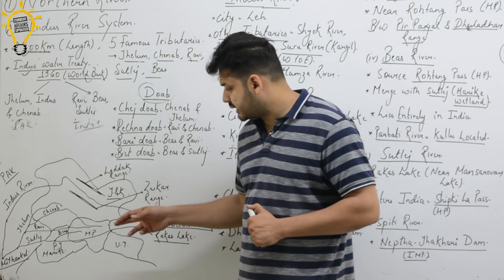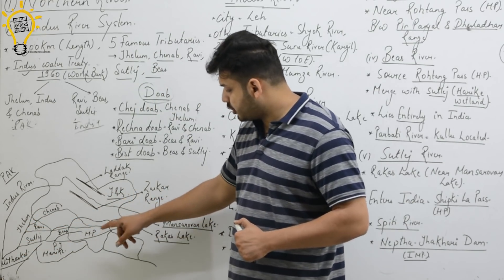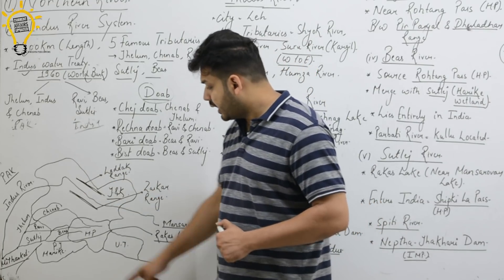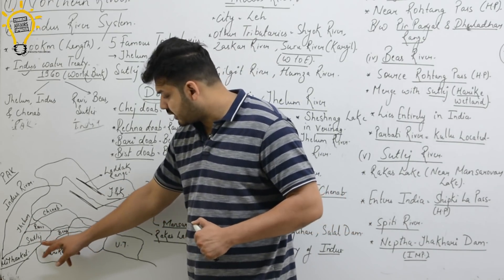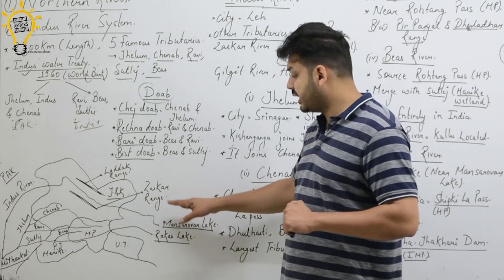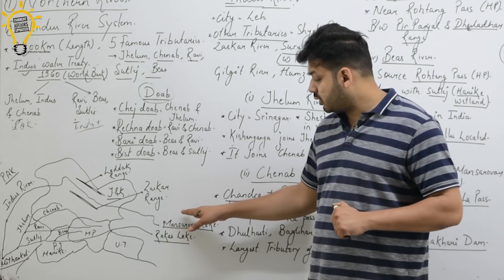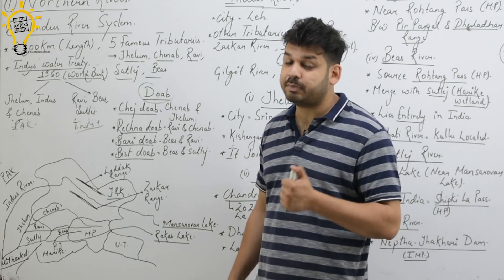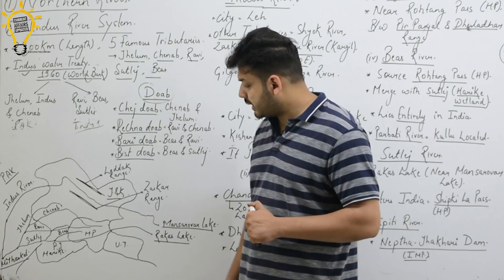If we talk about the tributaries, Jhelam River is in Jammu and Kashmir. Then Chenab is also there. Ravi flows between India and Pakistan. Vyash (Beas) originates from Himachal Pradesh.